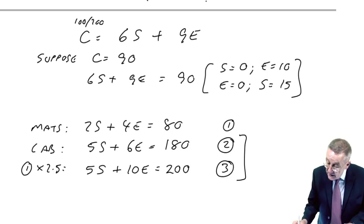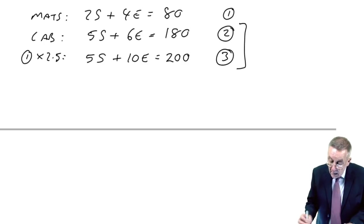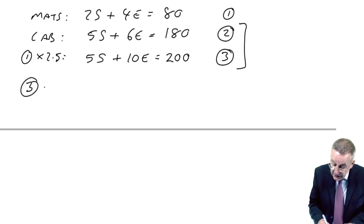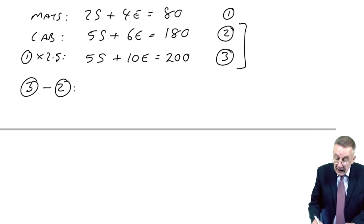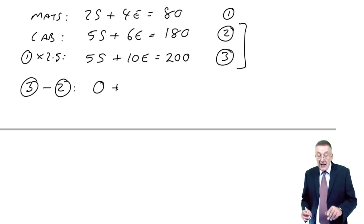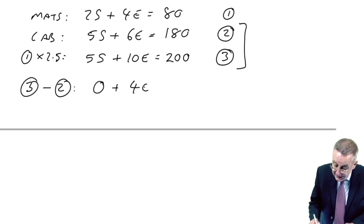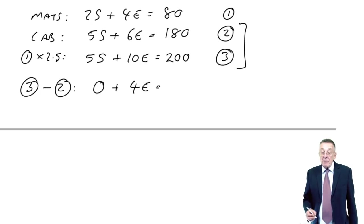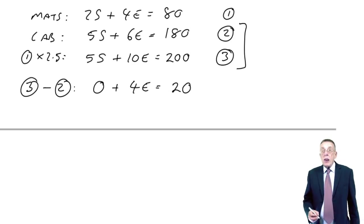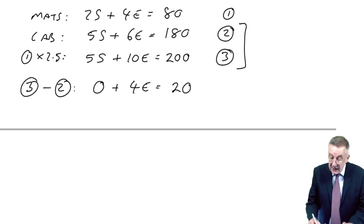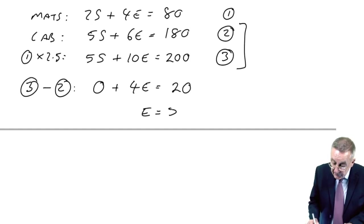And so what I can do now is this. If I subtract the second equation away from that third one, what happens? 5s minus 5s is 0. 10e minus 6e is 4e. 200 minus 180 is 20. And of course, if 4e is 20, e equals 5.